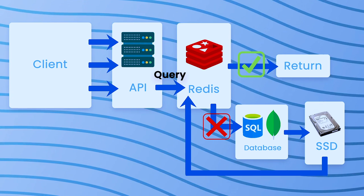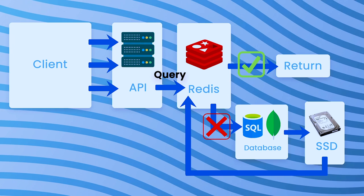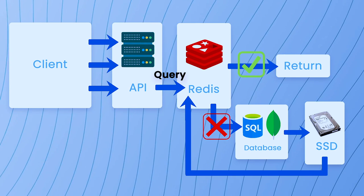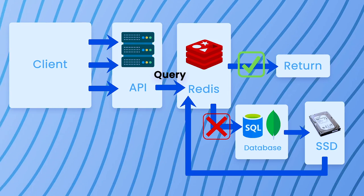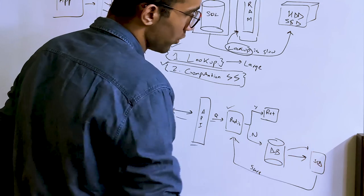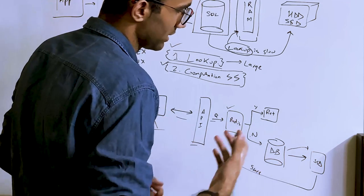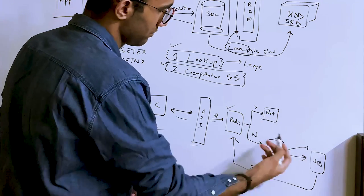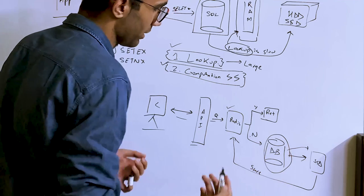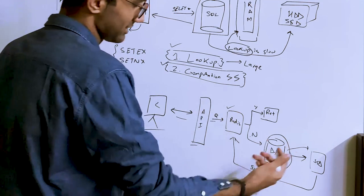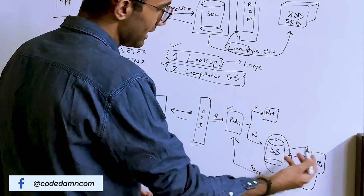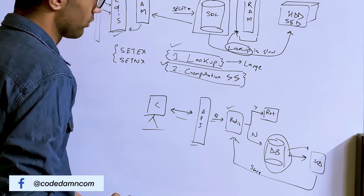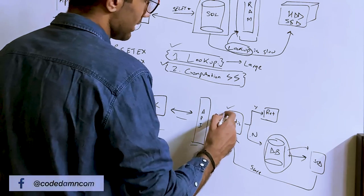If the cache is found, you return the cached result. If not, you run it through the database — which goes to disk using the database engine — gets the data, and ideally stores it back into cache for future use.